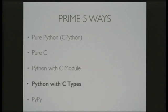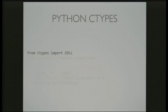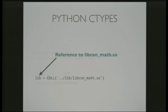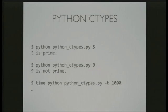I'm not going to be showing any more C code, because we've already written it all — and that's the beauty of ctypes. I just need to write a new Python script. I bring cdll in from ctypes, which lets you create a reference to a shared object file or DLL. You tell it the path to the shared object file, so now lib is a reference to libconmath.so. To refer to the is_prime_naive function, all I need to do is access it as an attribute on lib — you can access any function defined in that shared object file. And that's it.